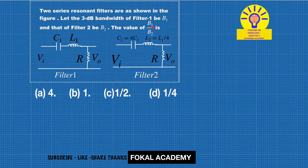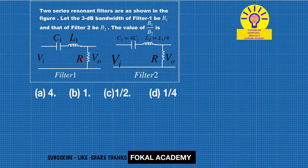B1 is the bandwidth for filter 1 and B2 is the bandwidth for filter 2. The two filters have no numerical values — they are represented as C1, L1 for filter 1, and the values for filter 2 are given in terms of the first filter's components. First, we find the resonant frequency.